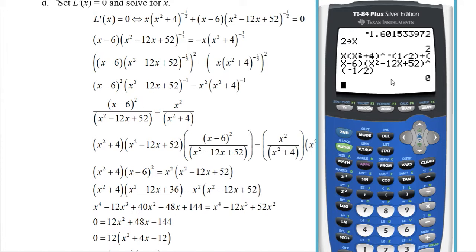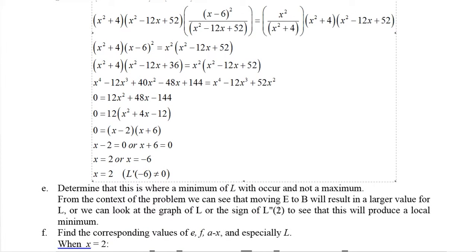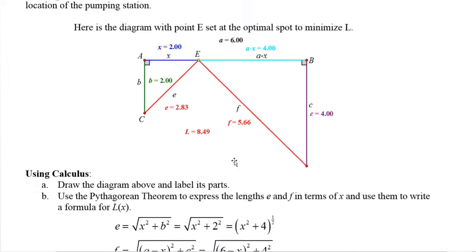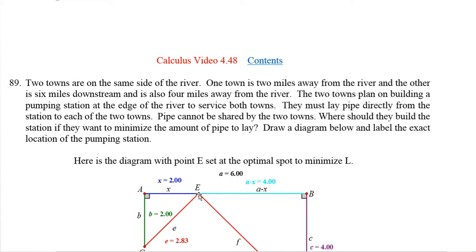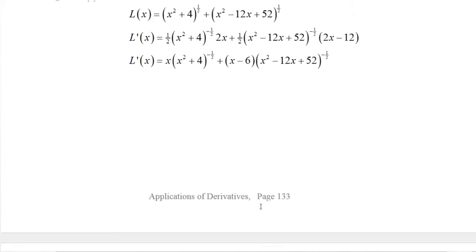Notice that one checks, but the other one doesn't. That happens sometimes when you raise both sides of an equation to an even power. Sometimes you'll get solutions where the negative 6 would be perfectly fine from this line down, but it's not a solution to the original. So the only legitimate solution is x equals 2. And that's exactly what I have graphed here, where x equals 2, that's going to be the minimum amount of pipe.